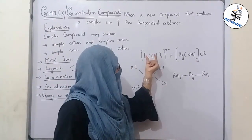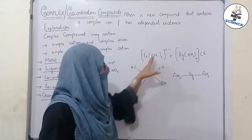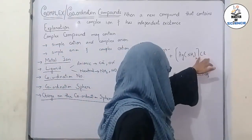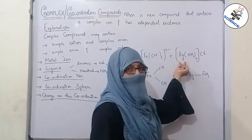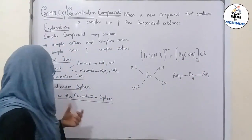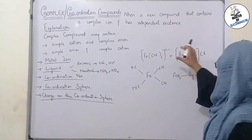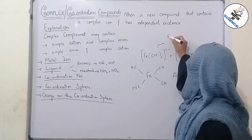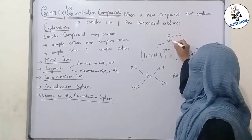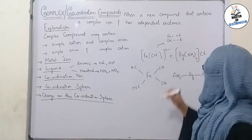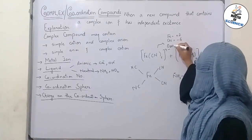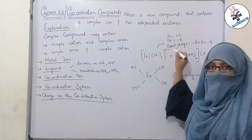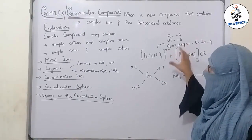Coordination sphere refers to the central metal ion along with the surrounding ligands that are enclosed in square brackets — this whole complex is called the coordination sphere. The charge on the coordination sphere is the overall charge on the complex. For example, in [Fe(CN)6]^4-, iron is in +2 oxidation state and each CN⁻ has -1 charge, so six CN⁻ groups give -6. The overall charge is +2 + (-6) = -4, which is the charge on the coordination sphere.